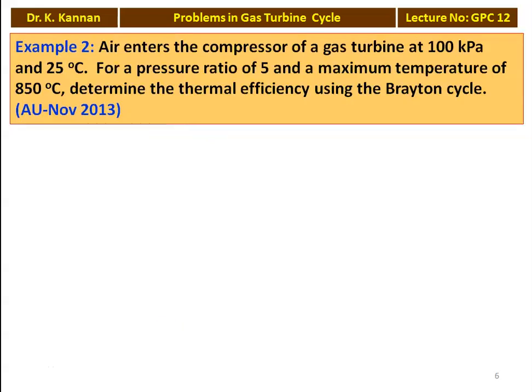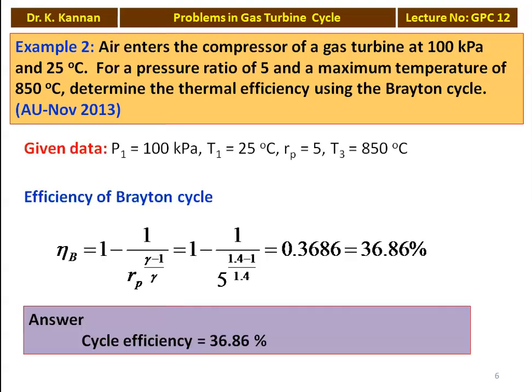The second problem is from November 2013. Air enters the compressor of a gas turbine at 100 kPa and 25°C. For a pressure ratio of 5 and maximum temperature of 850°C, determine the thermal efficiency using the Brayton cycle. Given: P1 = 100 kPa, T1 = 25°C, Rp = 5, T3 = 850°C. The Brayton cycle efficiency: η_B = 1 - 1/Rp^((γ-1)/γ) = 1 - 1/5^(0.4/1.4) = 0.3686, which is 36.86%.